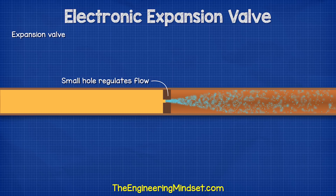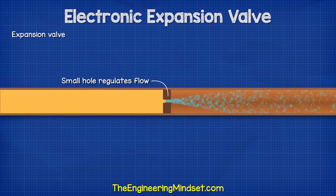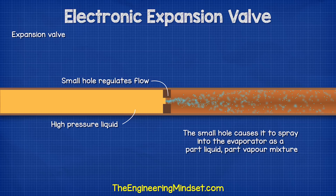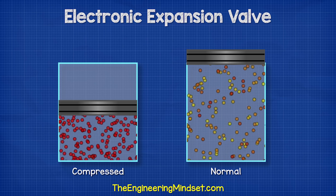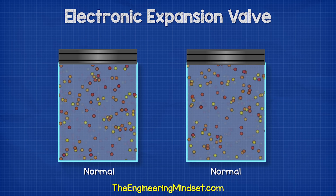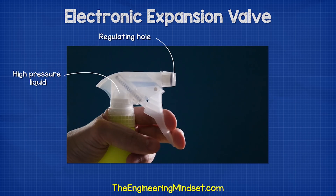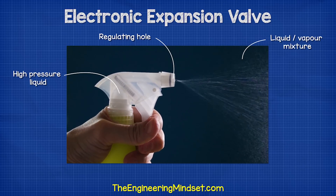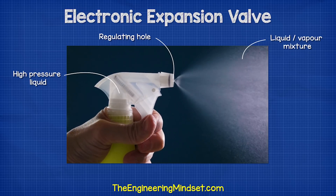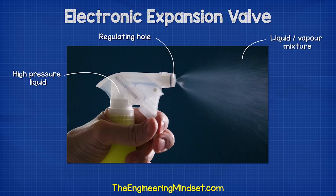The expansion valve regulates the refrigerant by only allowing it to pass through a small hole. This creates a large pressure difference across the valve — one side is the high pressure liquid, the other side is almost empty. The small hole causes it to almost spray into the evaporator as a part liquid, part vapor mixture. The refrigerant will expand to try and fill the empty space on the other side and this will cause it to drop in pressure as well as temperature. It's a little bit like spraying a deodorant can — it flows through a small hole causing it to expand as a part vapor and part liquid mixture, and then we can feel the can become cooler.